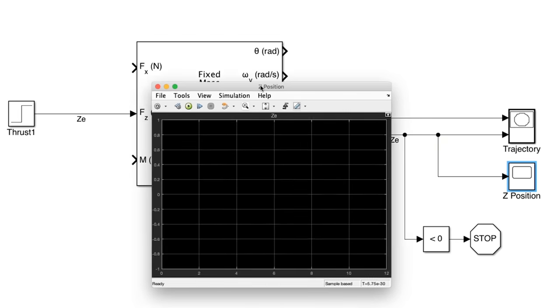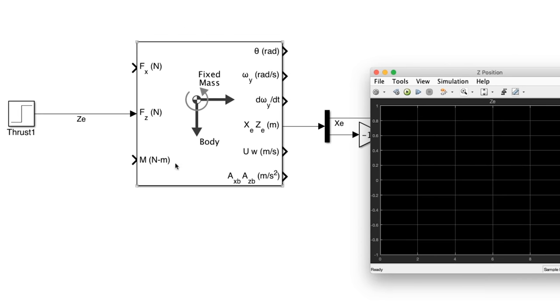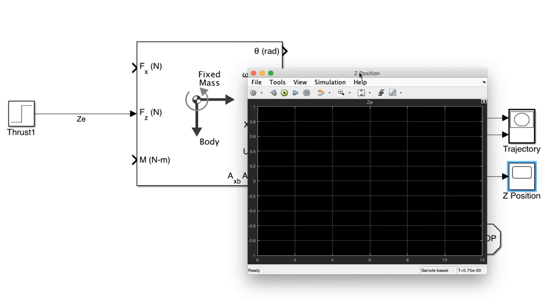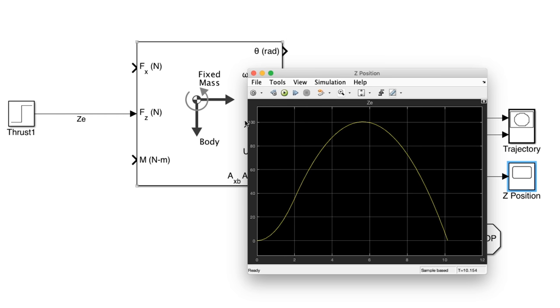Let's go ahead and open one up. Let's start with this one here, which I've named Z position, and this is going to represent our altitude. So when I click the run button, it's going to run that thrust curve through this 3DOF block, and then we're gonna get our altitude for the whole flight. So here we go, and look at that, we hit just about 100 meters on this flight.